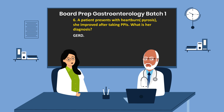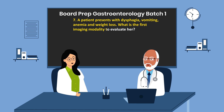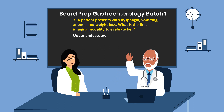Question 7. A patient presents with dysphagia, vomiting, anemia, and weight loss. What is the first imaging modality to evaluate her? Upper endoscopy.